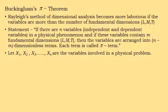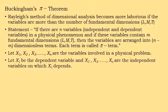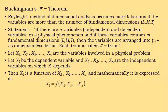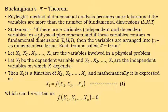Let x1, x2, x3 ... xn be the variables involved in the physical phenomenon. Let x1 be the dependent variable, so there are two types: x1 is the dependent variable, and x2, x3, up to xn are the independent variables. We can write x1 as a function of x2, x3 to xn — expression 1 — which can also be written as f1(x1, x2, x3 ... xn) = 0, taken as expression 2.